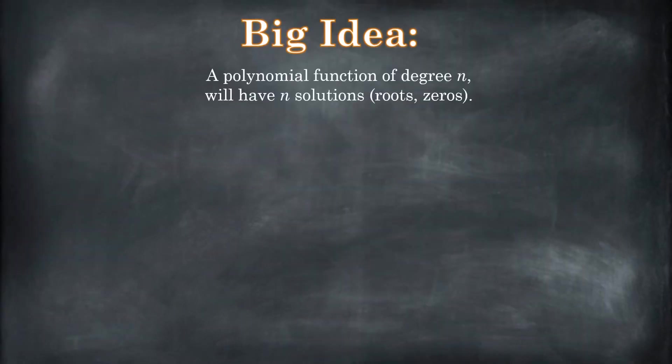If you have a polynomial function of degree n, you're going to have n solutions. Those solutions are sometimes called roots, sometimes called zeros, sometimes they're x-intercepts.